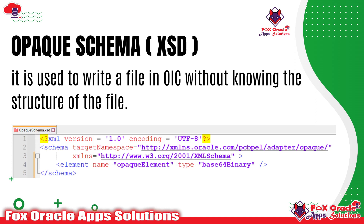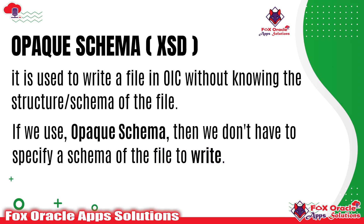Once you provide the schema in OIC while writing or creating the file, you need to provide the base64 code only — you cannot provide a file reference or raw data. Whenever we need to get a file in such a way that we don't have the schema, we use opaque schema. We can use opaque schema in two places: we can create the file in OIC, or we can write the file to an SFTP server, even when we don't have any specific schema.